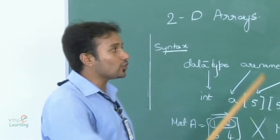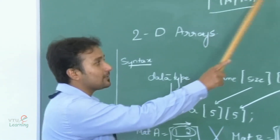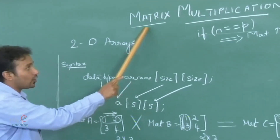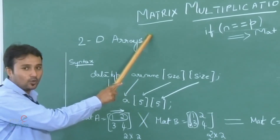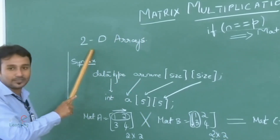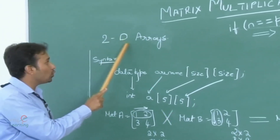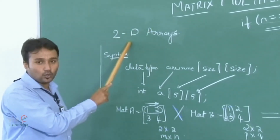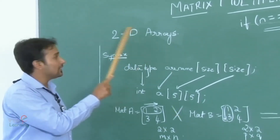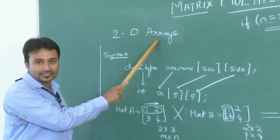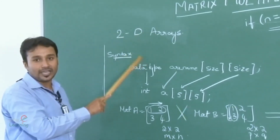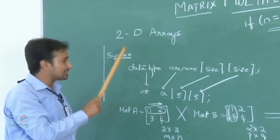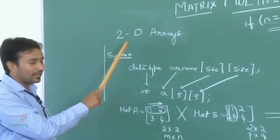Now let us look into the logic behind the matrix multiplication program. Before entering into the logic, we need to consider one of the very important concepts in C known as 2D arrays, which stands for two dimensional arrays. Two dimensional arrays are similar to one dimensional arrays except the fact that they have one more dimension, and the syntax for the same is explained as follows.